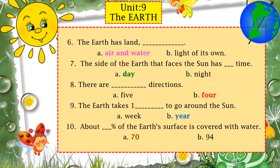Number six: the earth has land, dash — what — air and water, or light of its own? The earth has land, air, and water. The earth's surface — 70% of the earth's surface is covered with water and the rest 30% has land. If we divide it into 4 parts, 3 parts are covered with water. So you have to choose air and water.